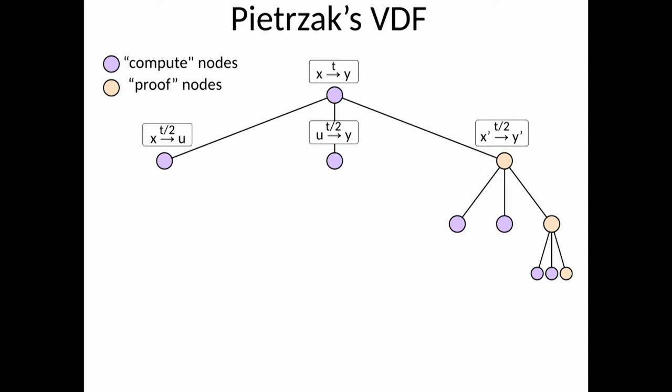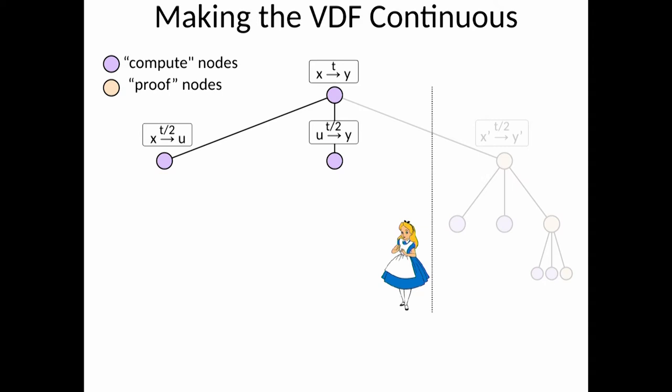And this is clearly if you want to make it continuous, namely that every intermediate state is verifiable, this doesn't work. Why? Because after the prover computed y, there's no proof along the way, so if you just stop the computation at that point, all of the work has gone to waste.